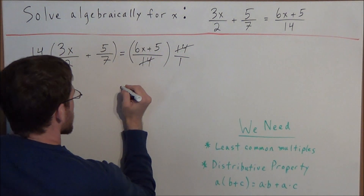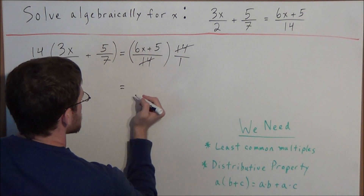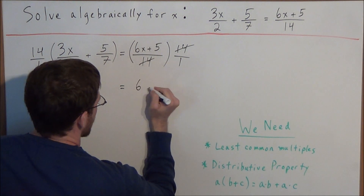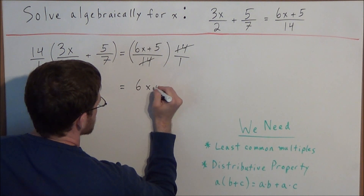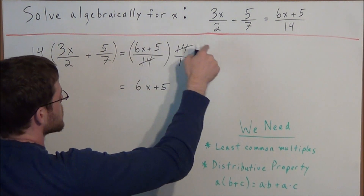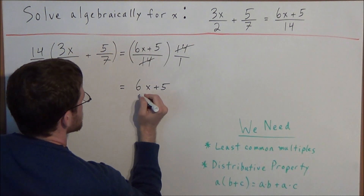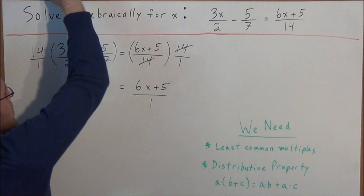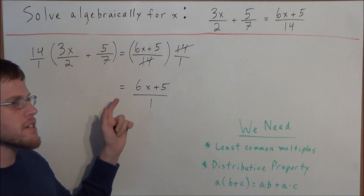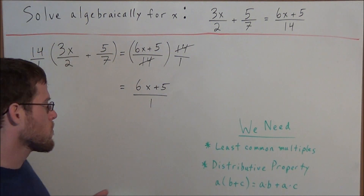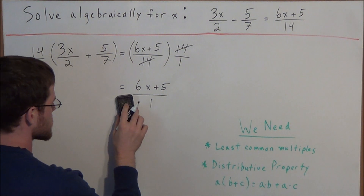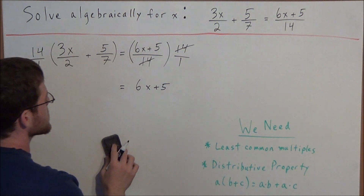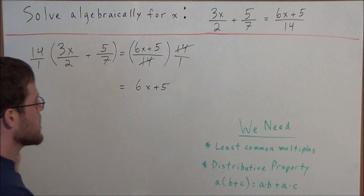On the right-hand side of this equation, all we're left with is 6x plus 5 in the numerator, and 1 in the denominator. So we can just call it 6x plus 5, because anything divided by 1 is just equal to itself.